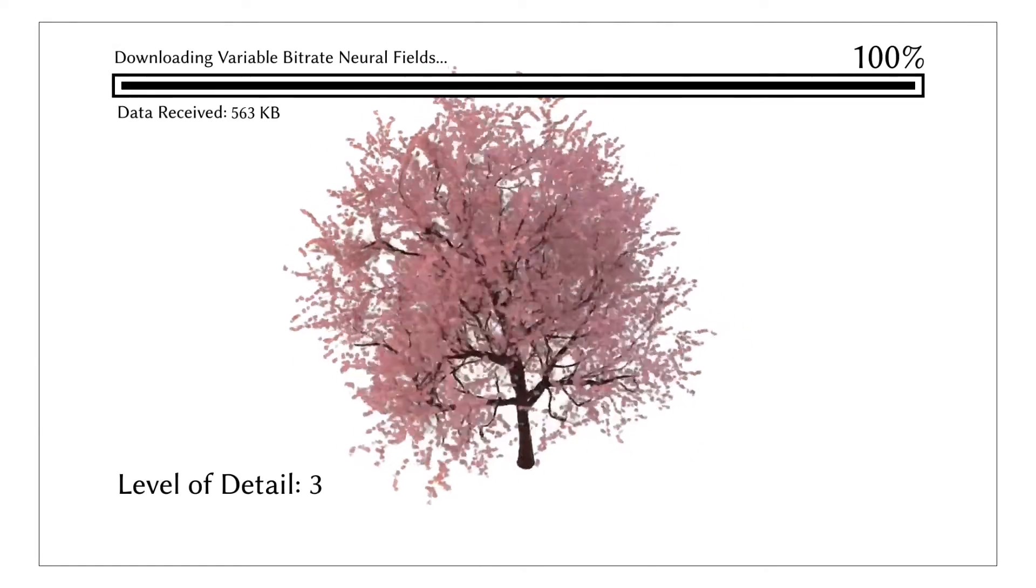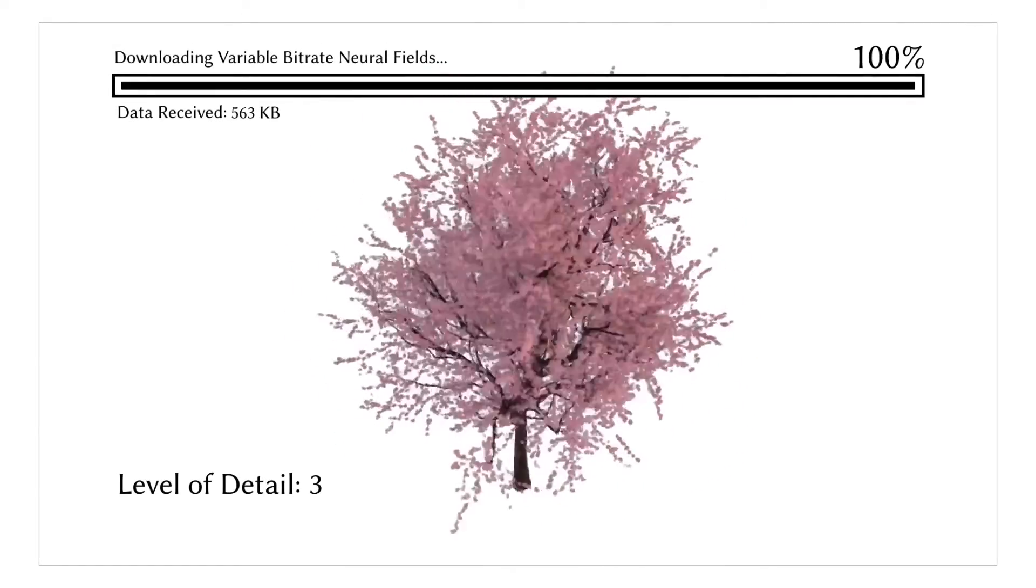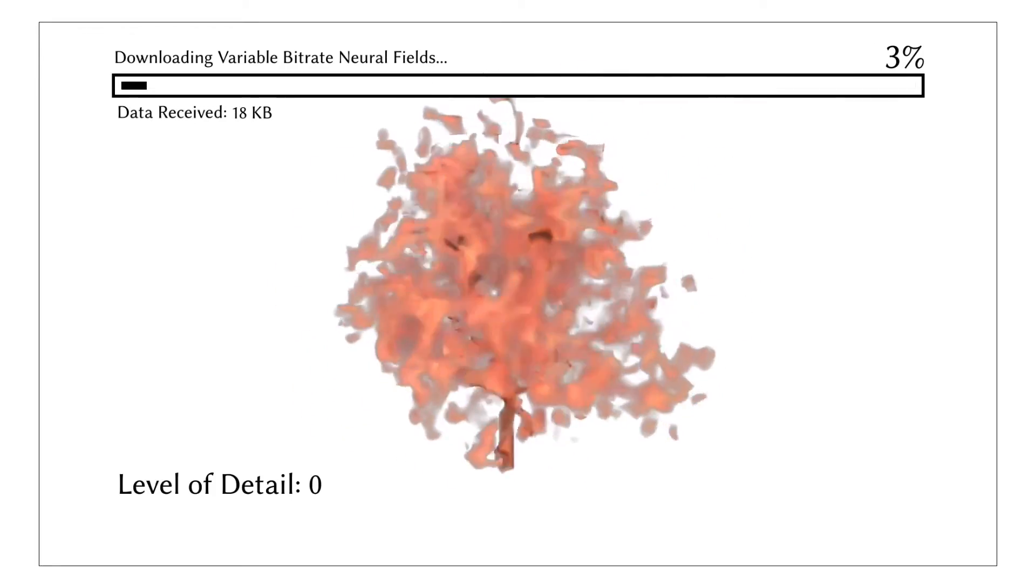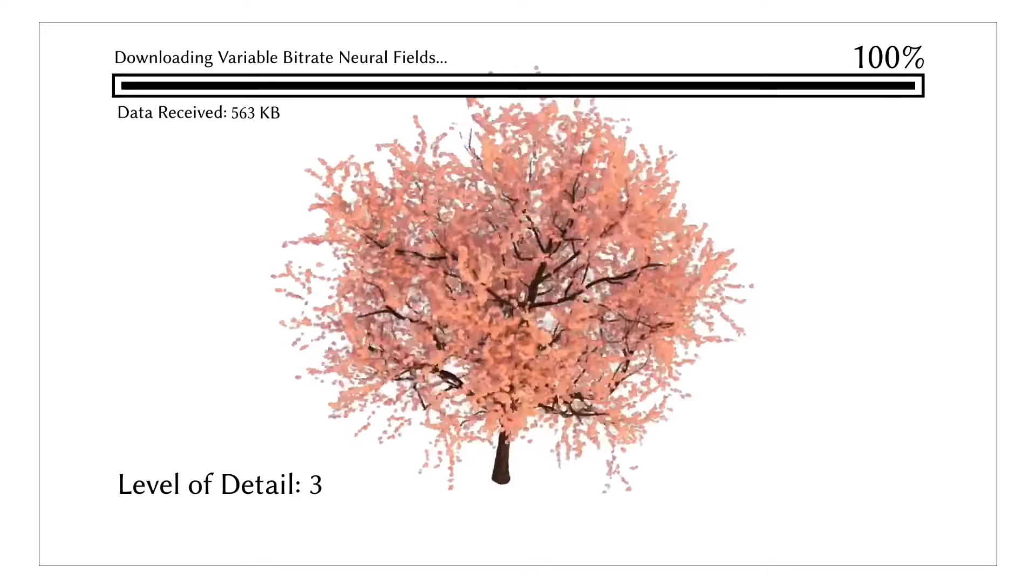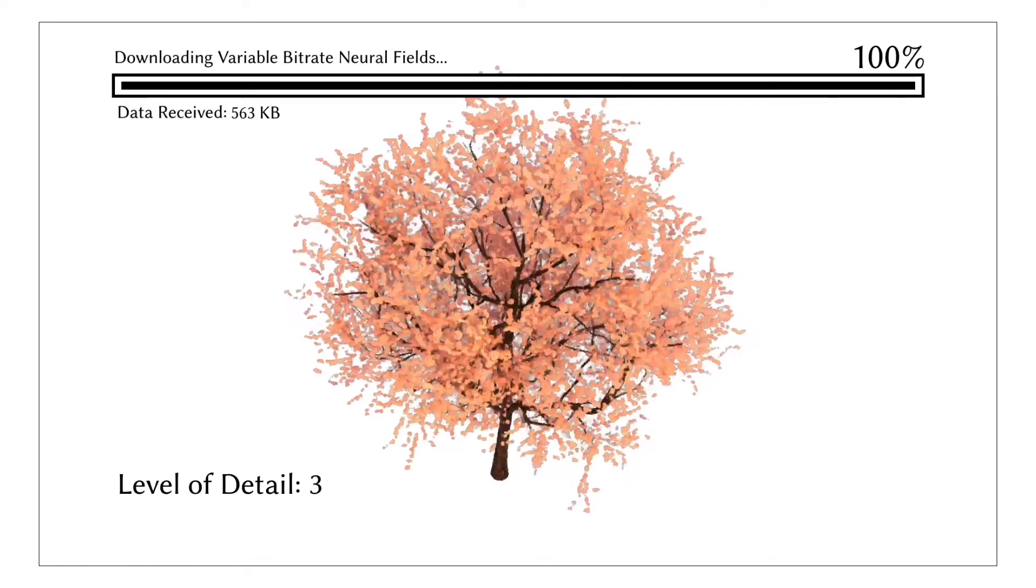Our work, Variable Bitrate Neural Fields, shows a first step towards this goal. This representation can encode high-fidelity 3D scenes in around half a megabyte and also enables progressive level of detail for instant visualization.